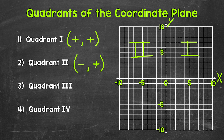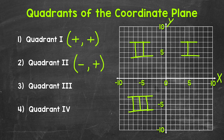Let's move on to quadrant 3, which is the lower left quadrant — this is quadrant 3 right here. For quadrant 3, the x-coordinates and y-coordinates are both negative. So if the x-coordinate is negative and the y-coordinate is negative, then the point will be in quadrant 3.